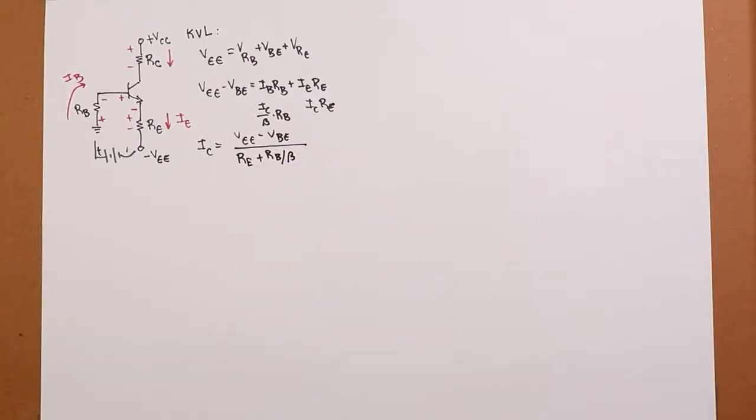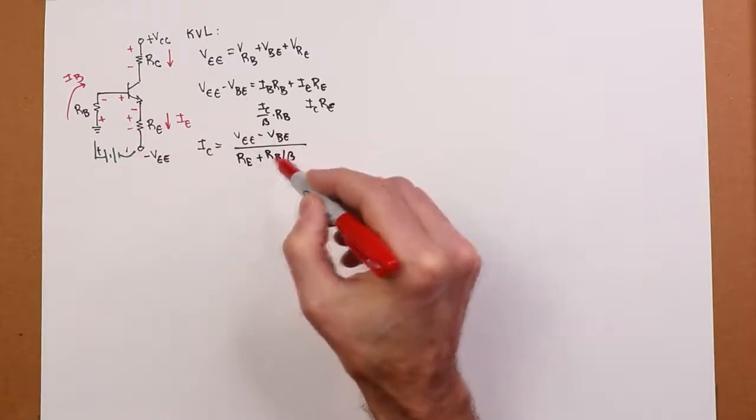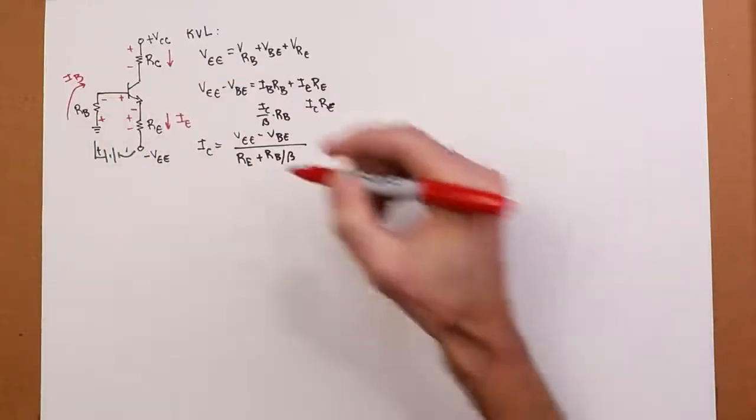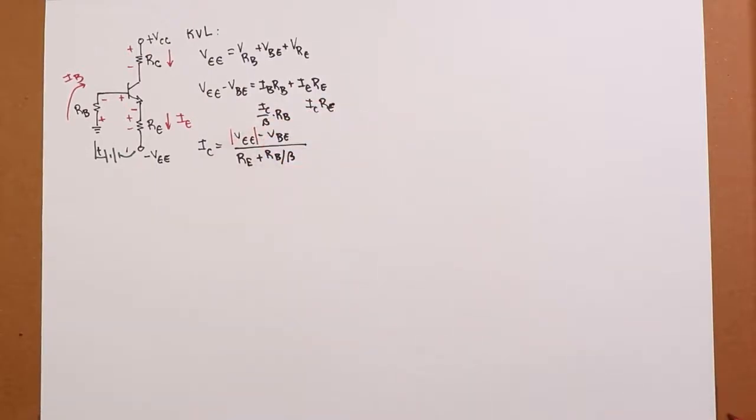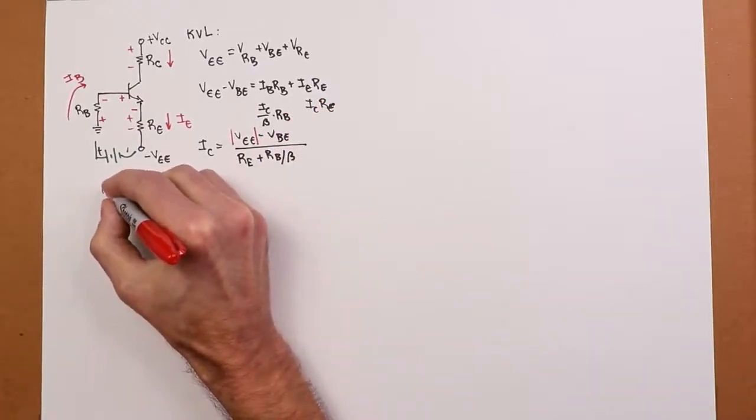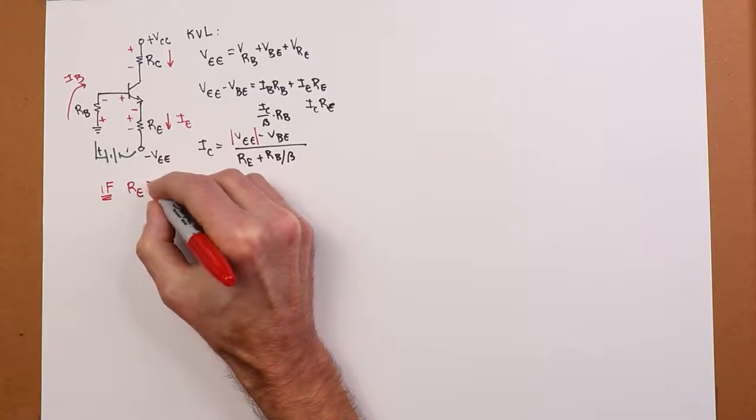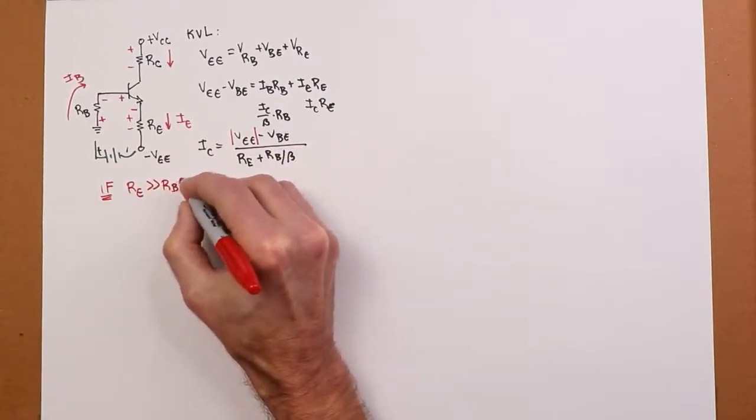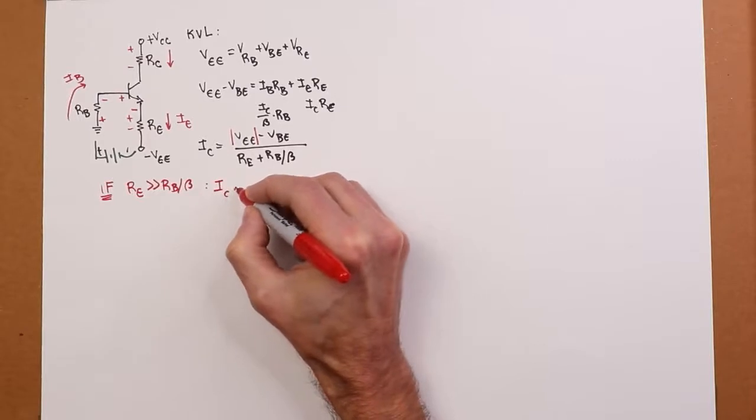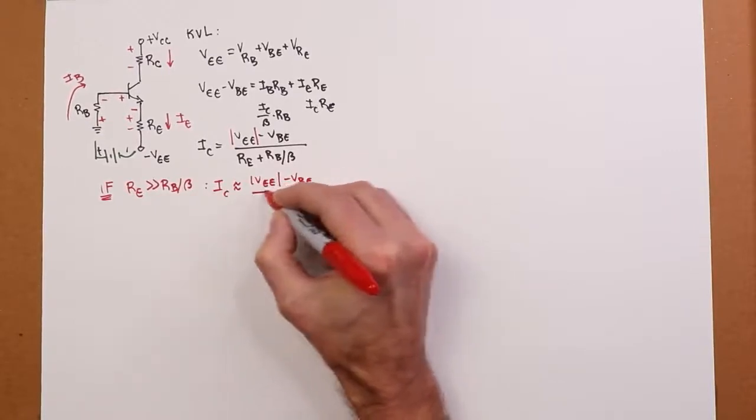What we wind up with is VEE minus VBE divided by the quantity RE plus RB over beta. Some people get a little confused by the VEE, because this is in fact a negative power supply. So they say, do I put a negative sign in here? If it's like negative 12 volts, do I put a negative 12? No, if you look at what we did here, it's the magnitude. What I like to do very often is I just put an absolute around this so people don't get confused. So you're just going to put the magnitude in there.